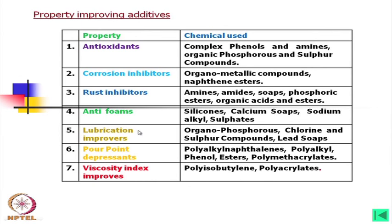Lubricant improvers use organophosphorus, chlorine and sulfur compounds, and lead sources. Pour point depressants — I will discuss what pour point is in the next slides. The compound used is polyalkyl ethanolins, which is difficult to pronounce.